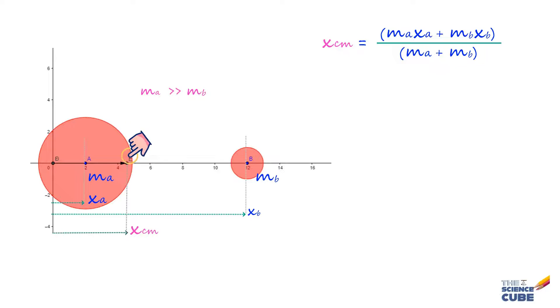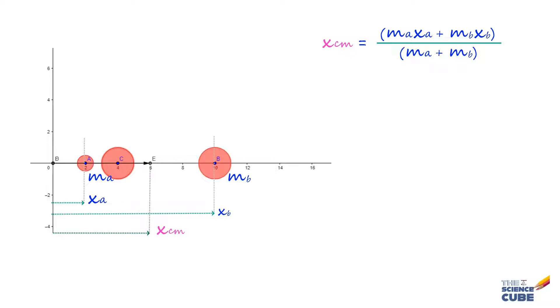Now let us introduce another particle mc at xc. Then we can find the center of mass of this setup by simply adding mc, xc in the numerator and adding mc in the denominator. And then this formula will give us the position of center of mass for these three masses. So you see here how introduction of third mass moved center of mass in this direction.